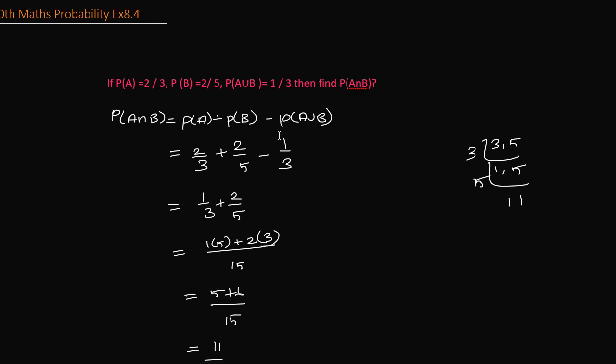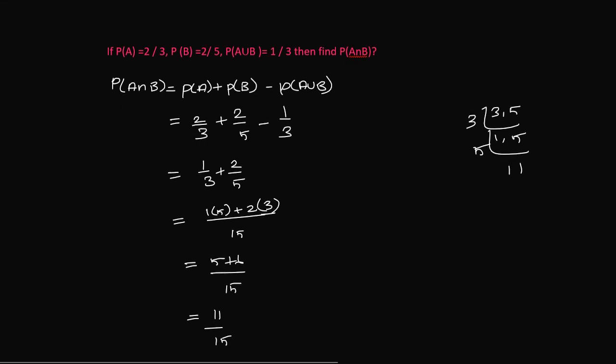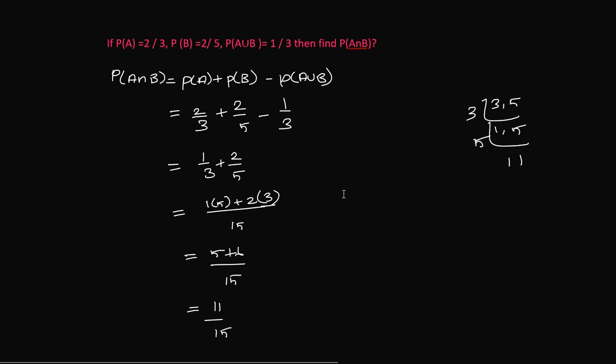Hi students, welcome back to Smart Learn Tuition. This is Exercise 8.4, Question Number 1, Probability. The second exercise, 8.4, first sum. If P(A) equals 2/3, P(B) equals 2/5.